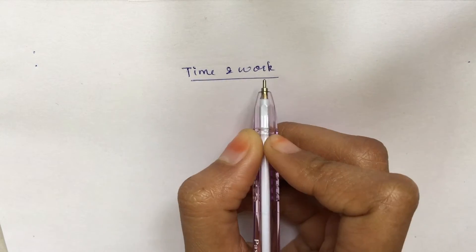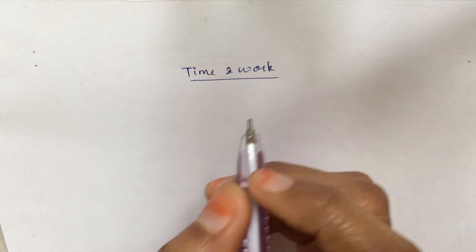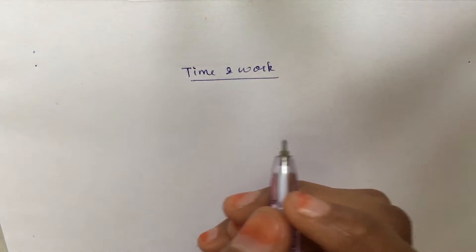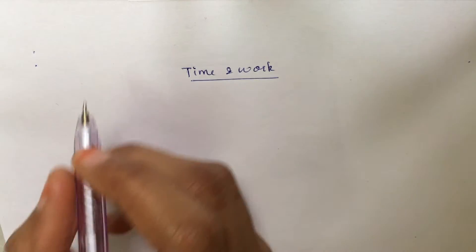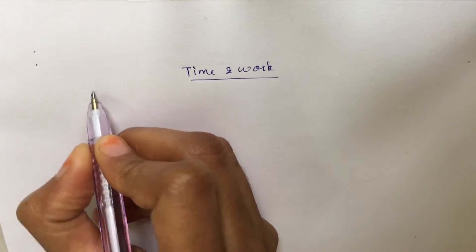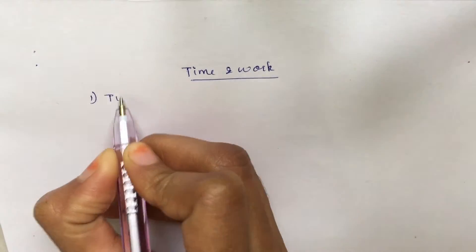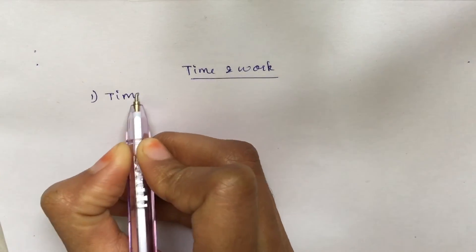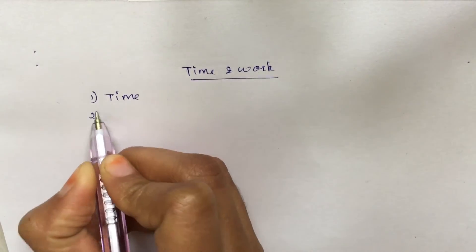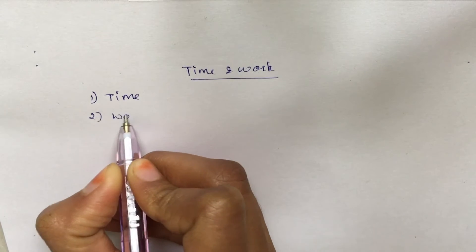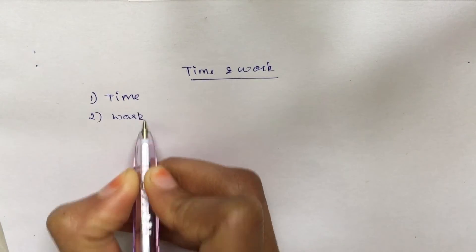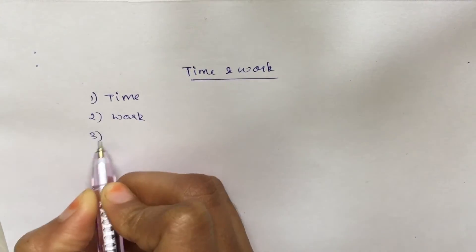In time and work, three things are important. First: time, work, and manpower. These are the three core elements of all time and work problems.